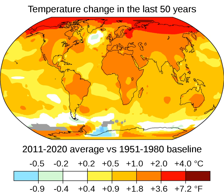Agriculture, steel making, cement production, and forest loss are also significant sources. Temperature rise is affected by climate feedbacks as well, such as the loss of sunlight-reflecting snow cover, and the release of carbon dioxide from drought-stricken forests. Collectively, these amplify global warming.